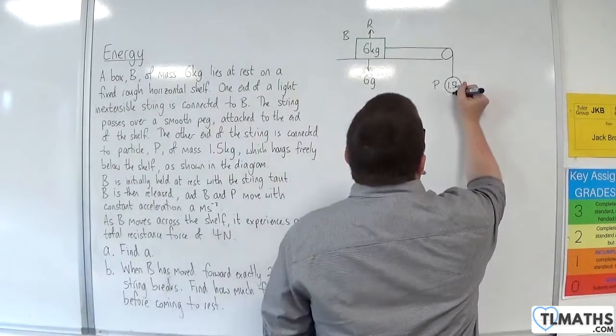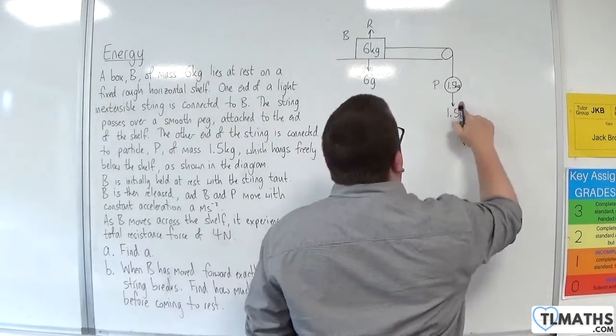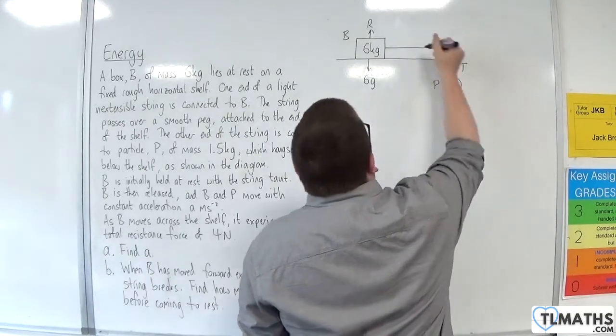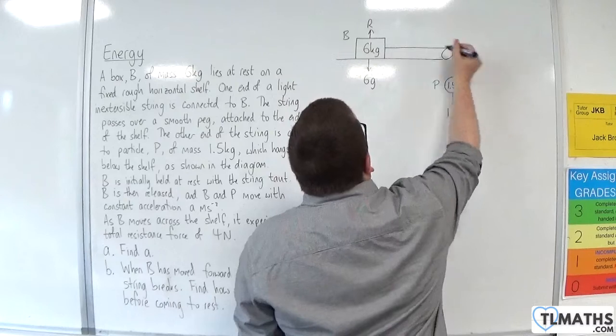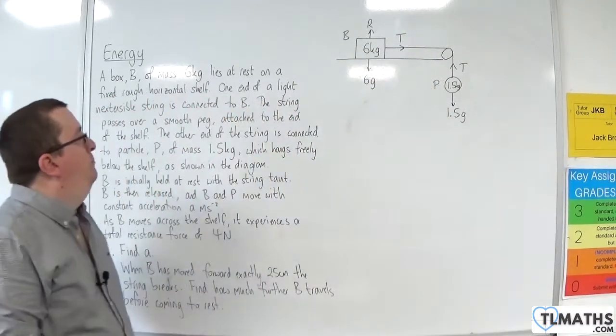So, particle P will have a weight of 1.5g. Now, there will be tension in the string working upwards from P and tension in the string to the right of B.